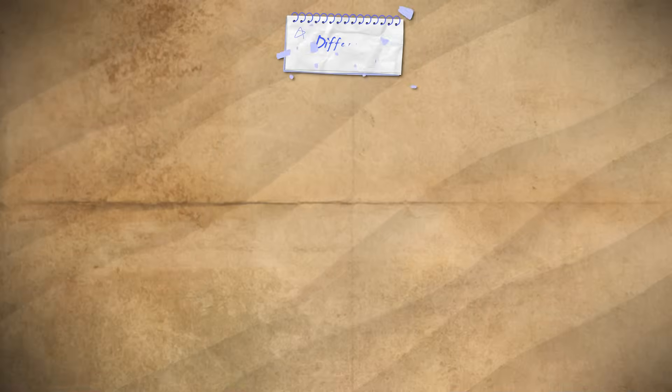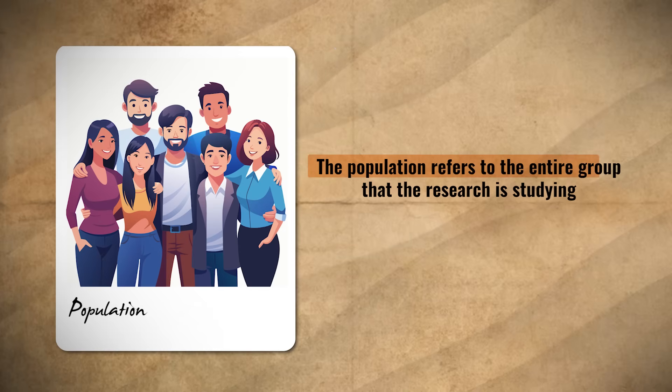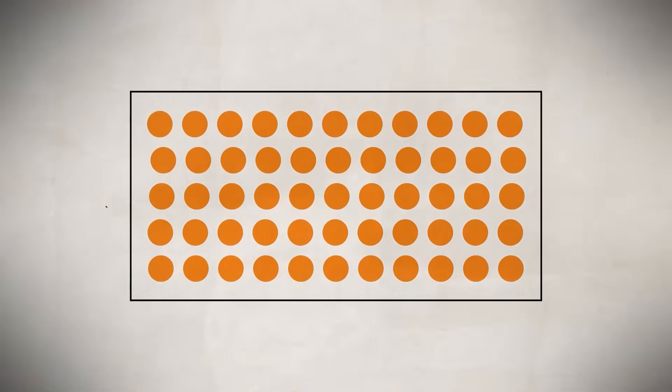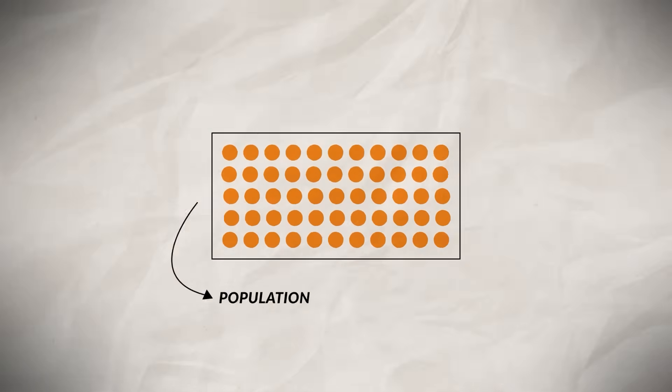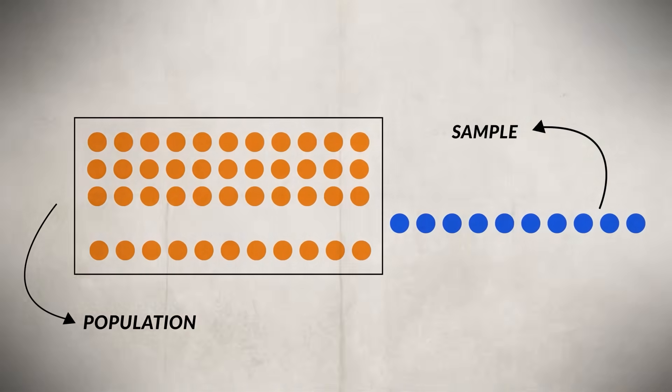Now that we have the hypothesis, variables, and parameters set, we need to move on to participants. The population refers to the entire group the research is studying, while the sample is the selected group of individuals chosen to represent the population. For instance, if conducting a study on students at your school, the population would be the entire student body and the sample would be the selected students.